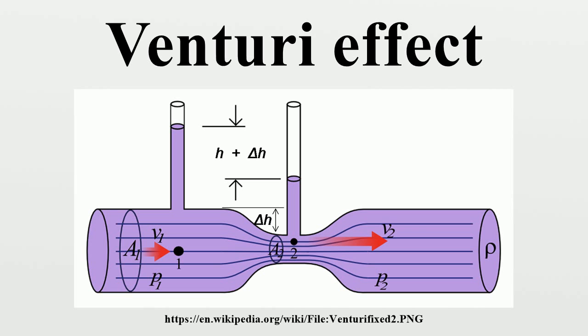Thus any gain in kinetic energy a fluid may accrue due to its increased velocity through a constriction is balanced by a drop in pressure. By measuring the change in pressure, the flow rate can be determined.